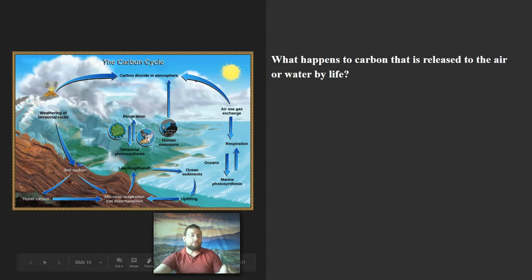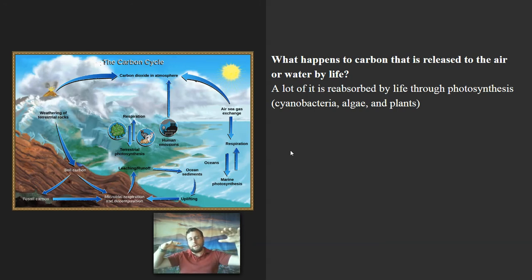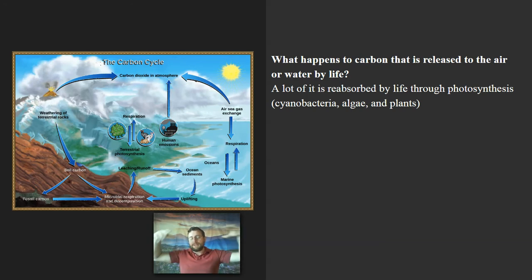What happens to most of the carbon released to the air or water by life? A lot of it is actually reabsorbed by producers — the ones that do photosynthesis, like cyanobacteria, algae, and plants — which trap the carbon dioxide right back. If it weren't for human emissions, there would be a pretty stable amount of carbon dioxide in the air, because life pretty much constantly cycles out the carbon dioxide that's produced. On a closed ecosystem, you would have no net increase in carbon dioxide, since producers do more photosynthesis than cell respiration in order to store food for the future.